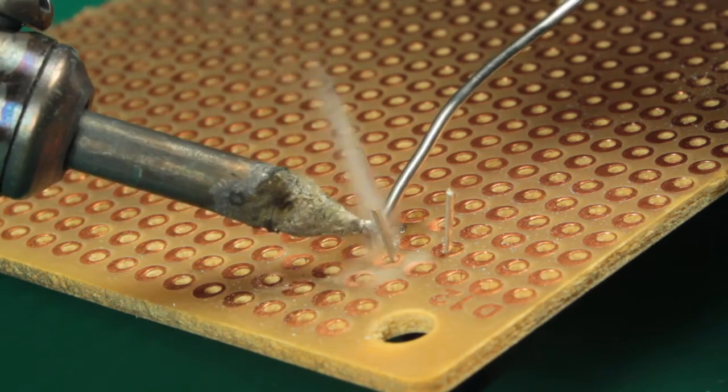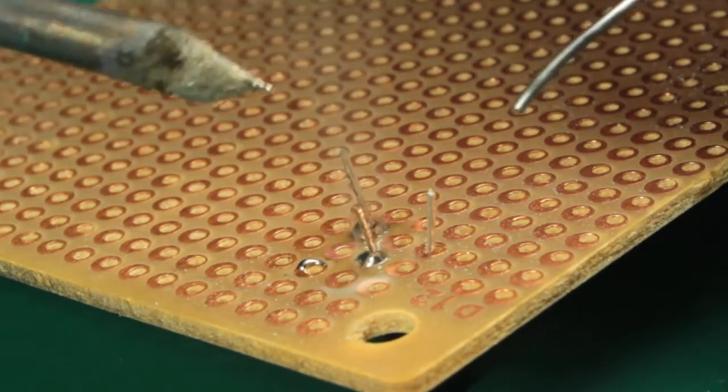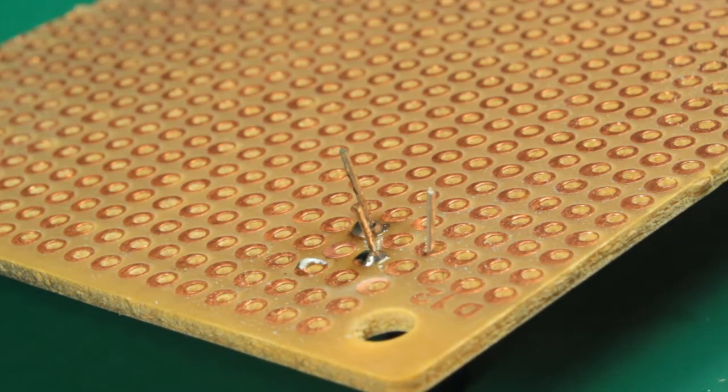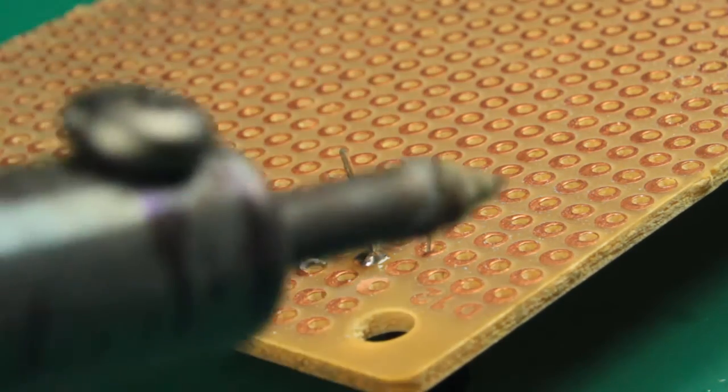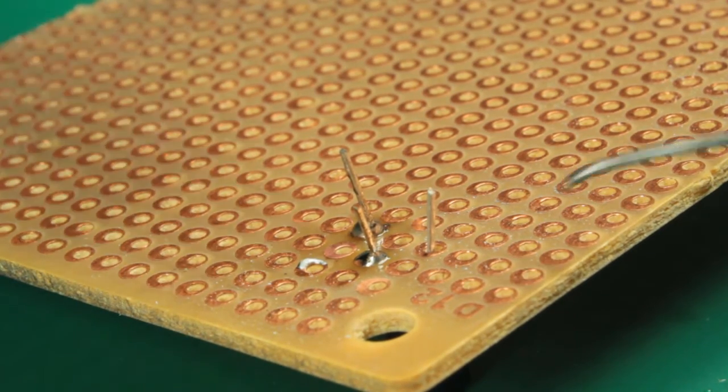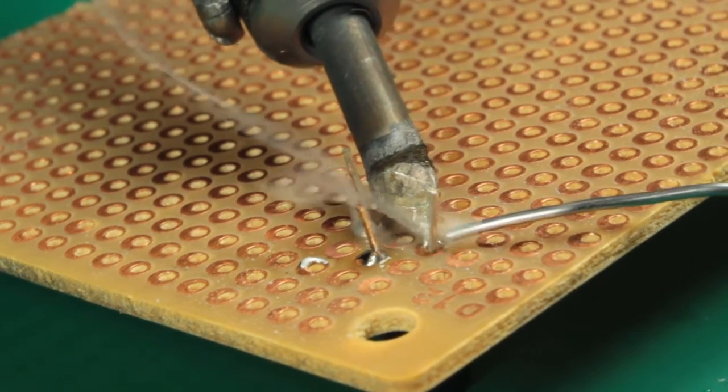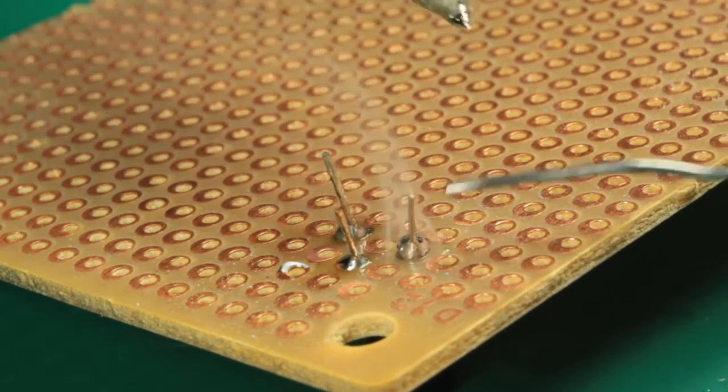Come straight in. Put a little on our tip. Heat up the board. Add solder. Back out. And we'll come in from this way so you can see. Add a little solder to our tip. Touch the board and add solder. That's it.